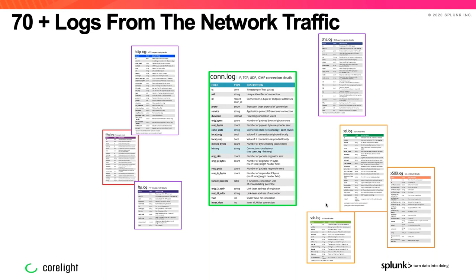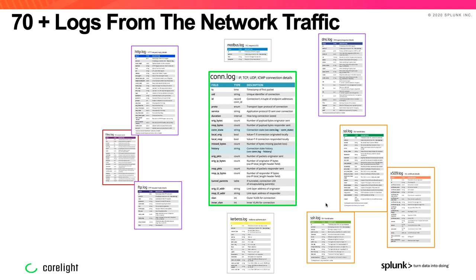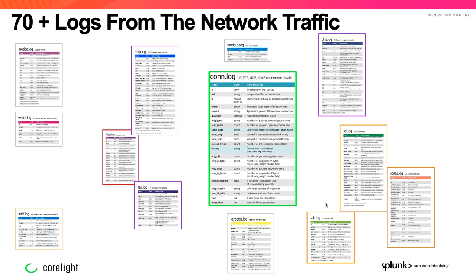Corelight can also look at OT-based protocols — think of protocols like Modbus, BACnet, ProfitNet, etc. For Microsoft-based protocols, we have Kerberos, RDP, and others. Having access to these protocols is great, but Corelight goes a step ahead — we provide alerts and insights into that data. Corelight has a notice log used for alerting based on behavioral detections and packages, and an Intel log that functions as a threat intelligence feed, highlighting any traffic it identifies as bad.